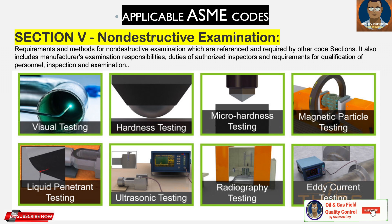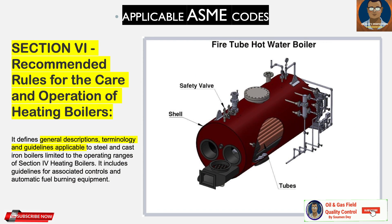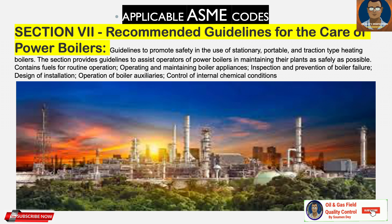Section 6 covers ASME recommended rules for care and operation of heating boilers. It defines general descriptions, terminology, and guidelines applicable to steel and cast iron boilers limited to the operating ranges of Section 4 Heating Boilers. It includes guidelines for associated controls and automatic fuel burning equipment. Section 7 provides recommended guidelines for the care of power boilers — guidelines to promote safety in the use of stationary, portable, and traction type heating, covering routine operation, maintenance, boiler appliances, inspection, prevention of boiler failure, and control of internal chemical conditions.